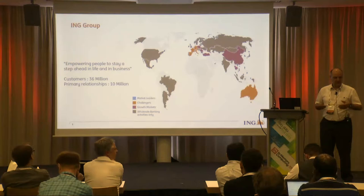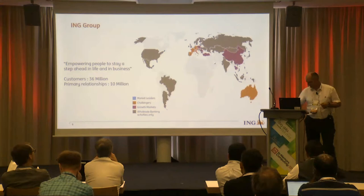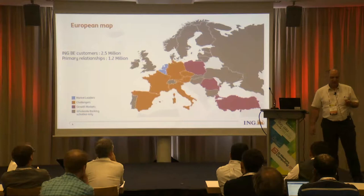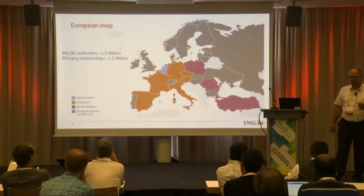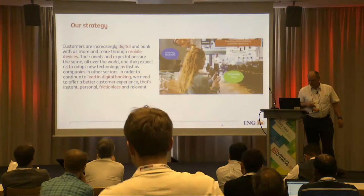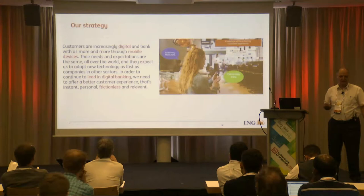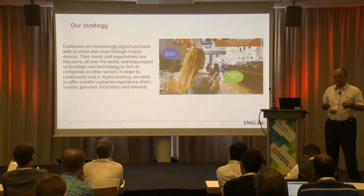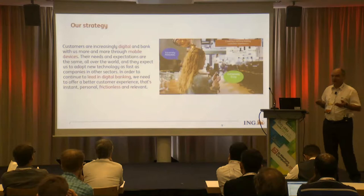I'm working for ING Belgium. We are market leaders in our country with about 2.5 million active customers, where the primary relationship is with 1.2 million customers. Our strategy is to make life easier for our customers — they can use our applications anywhere. We see our competitors as fintech companies like Google and Facebook, which may be thinking about becoming a bank tomorrow. We want to take the lead in what we call digital banking.